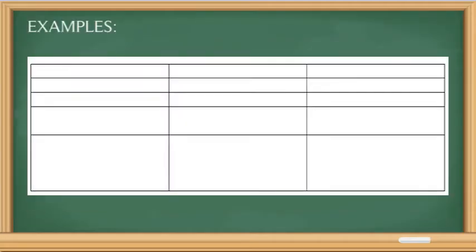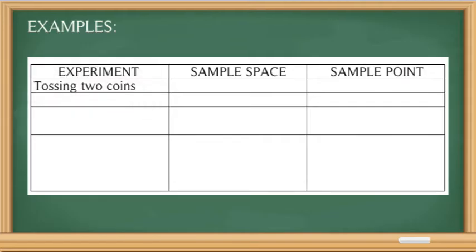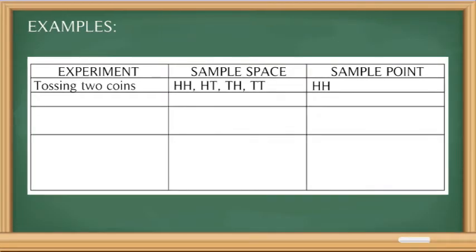Let us have some examples. Here we have the experiment, sample space, and sample point. For example, we have tossing 2 coins as our experiment. If we toss 2 coins, our sample space — the entire possible outcomes — will be: heads-heads, heads-tails, tails-heads, and tails-tails. Our sample point will then be one of the possible outcomes, for example, heads-heads.